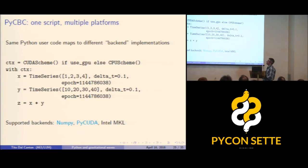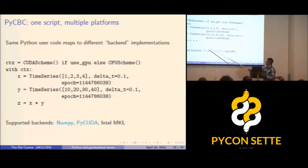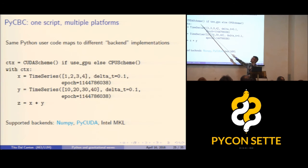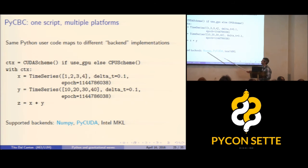A nice feature of PyCBC is that the same Python code can run on different computing platforms. Using the concept of computing backends, the same script can execute using NumPy on CPUs, on GPUs using PyCUDA, or on Intel MKL. This is done with context objects: setting a CUDA scheme redirects calls to GPU implementations, while a CPU scheme uses the CPU backend. Enter and exit hooks internally manage state and redirect array operations to different implementations.